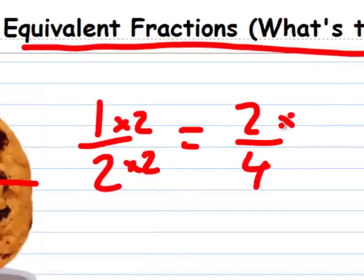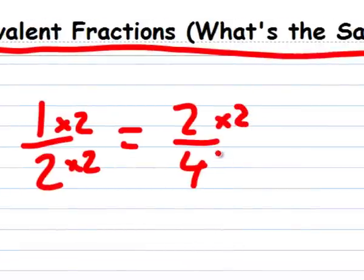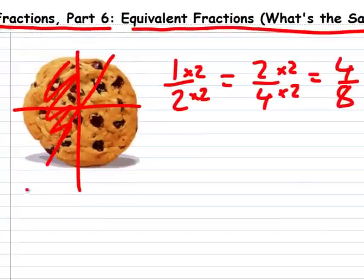Let's try that again. Two times two equals four, and four times two equals eight. So two fourths equals four eighths. And if we split the cookie into eight equal pieces, you can see that you have one, two, three, four of those pieces.